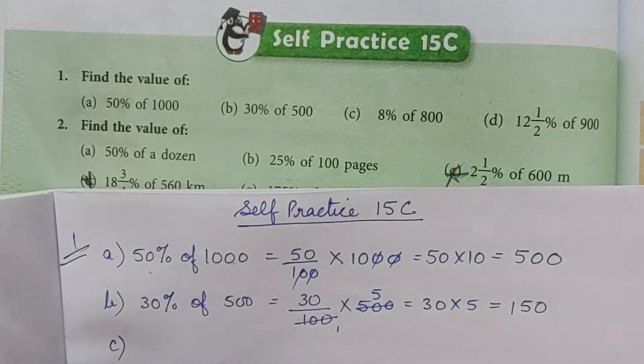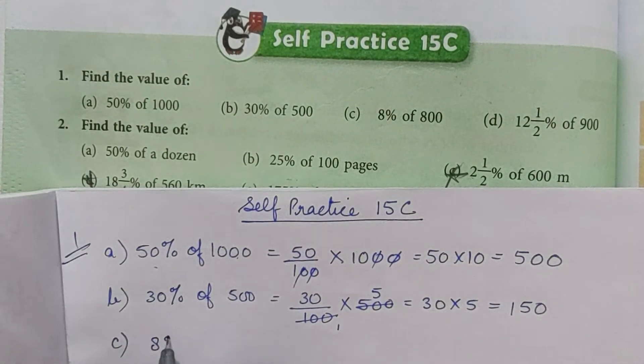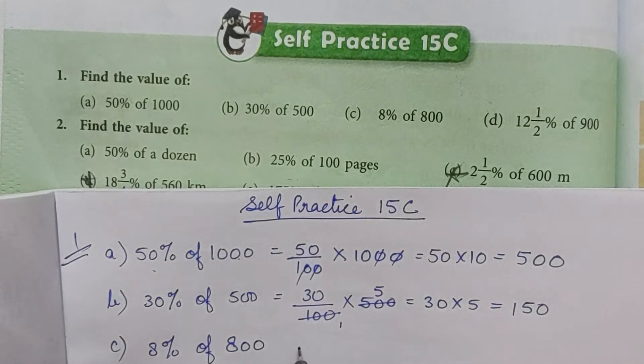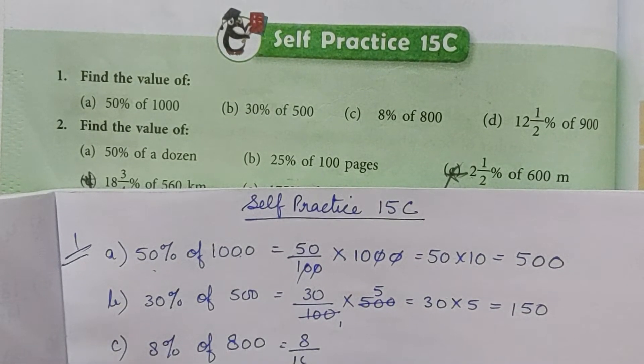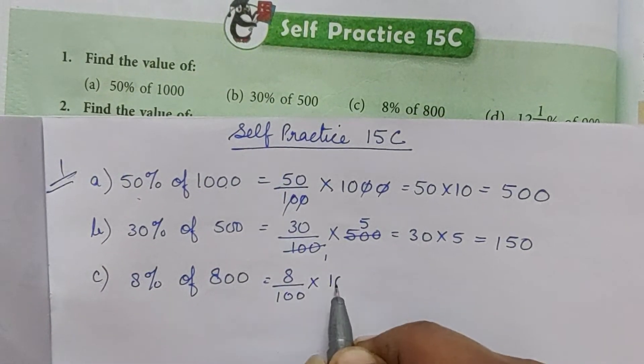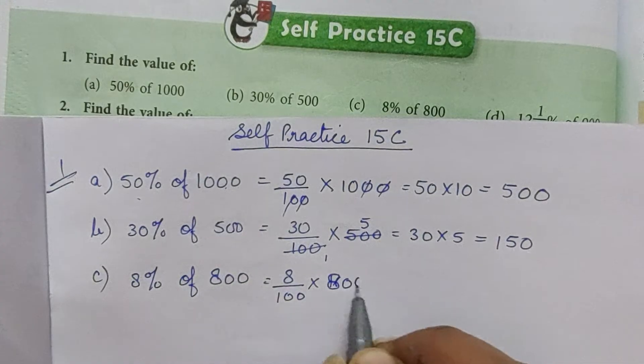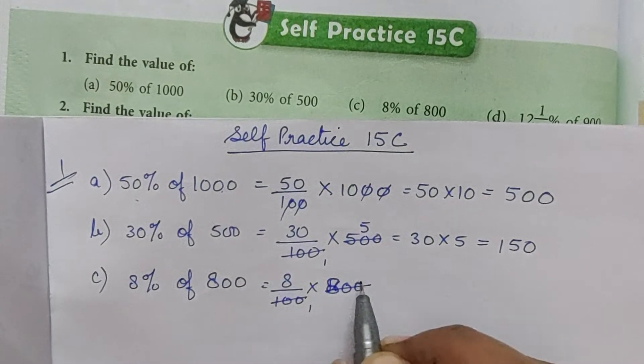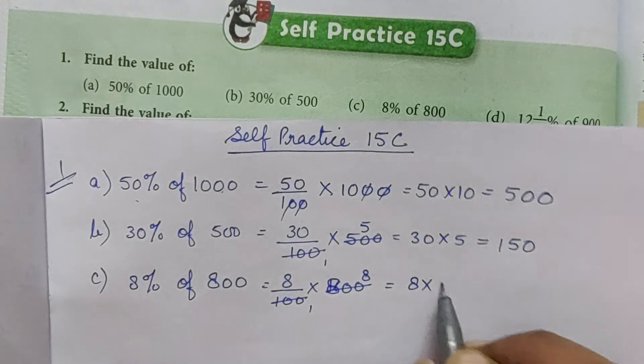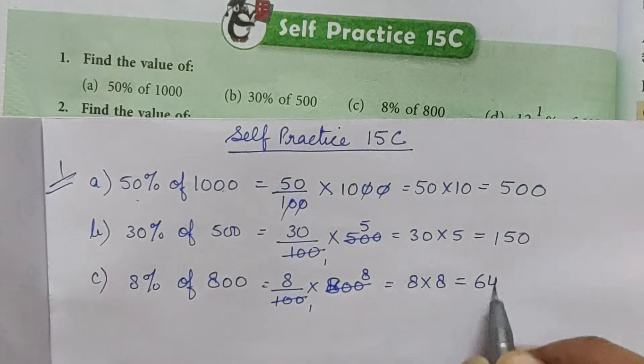Part c: 8% of 800, so 8 by 100 into 800. 100 ones are 100, 100 eights are 800, and 8 into 8 is equal to 64.